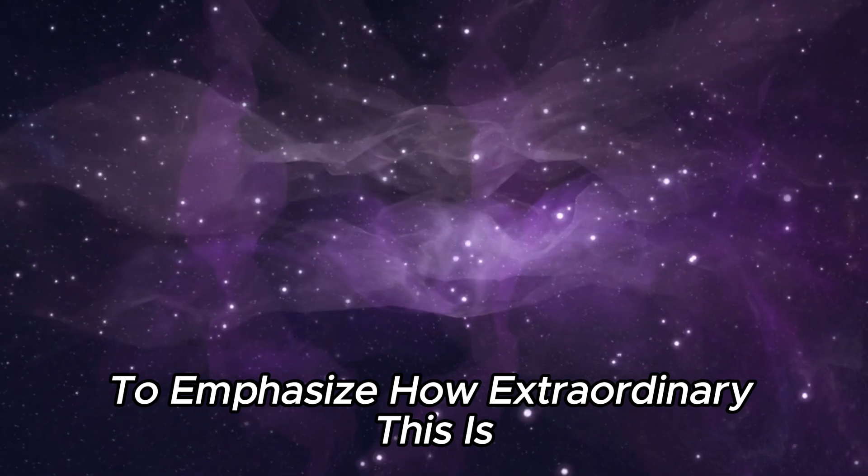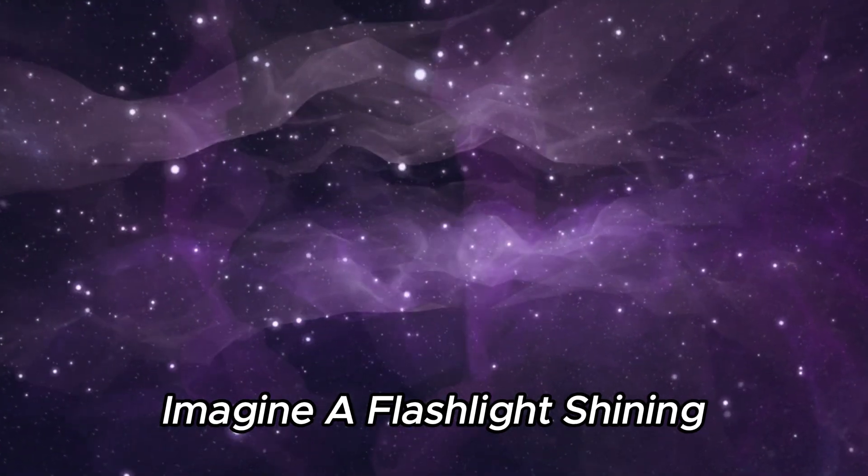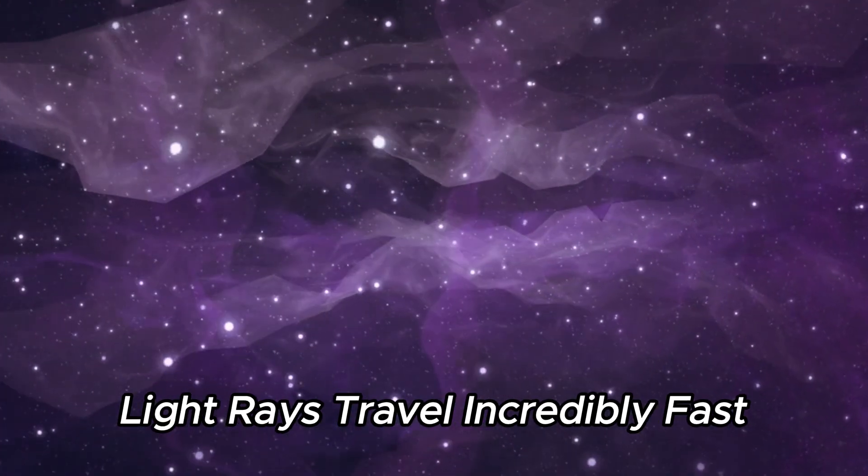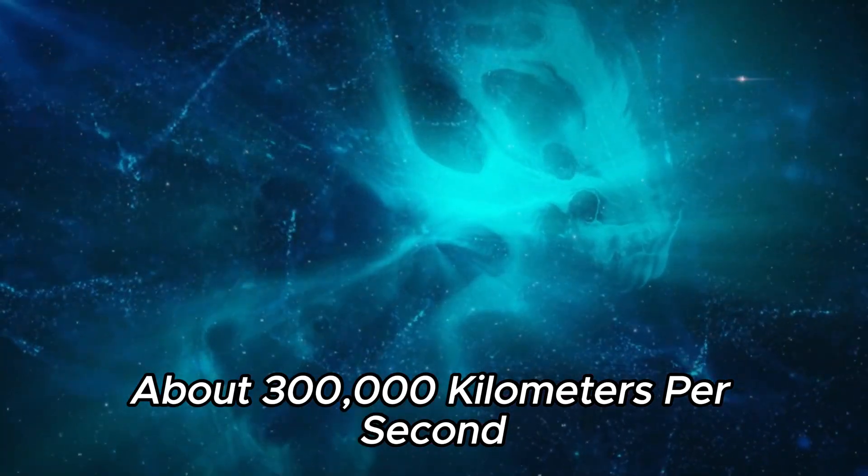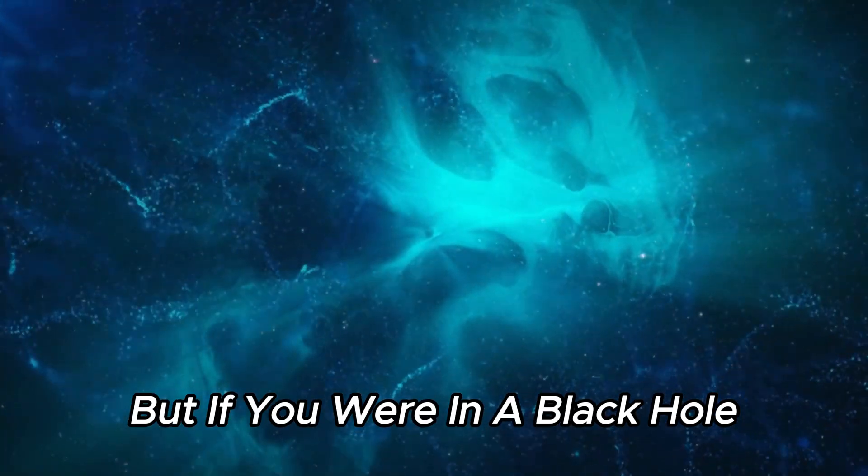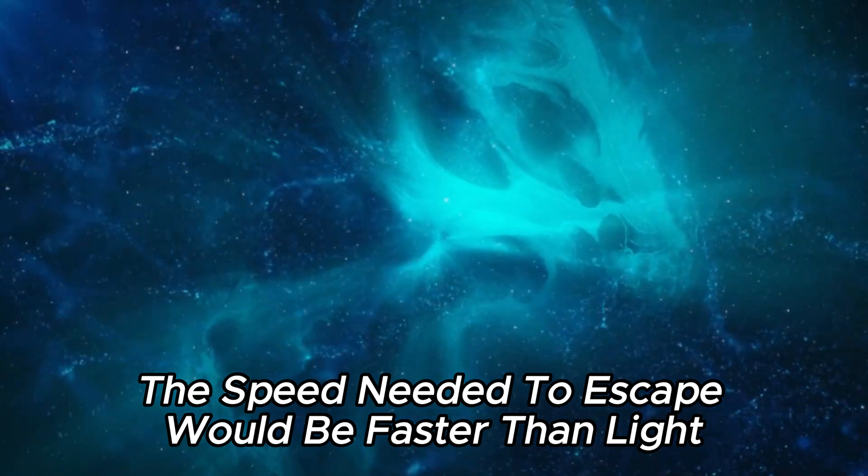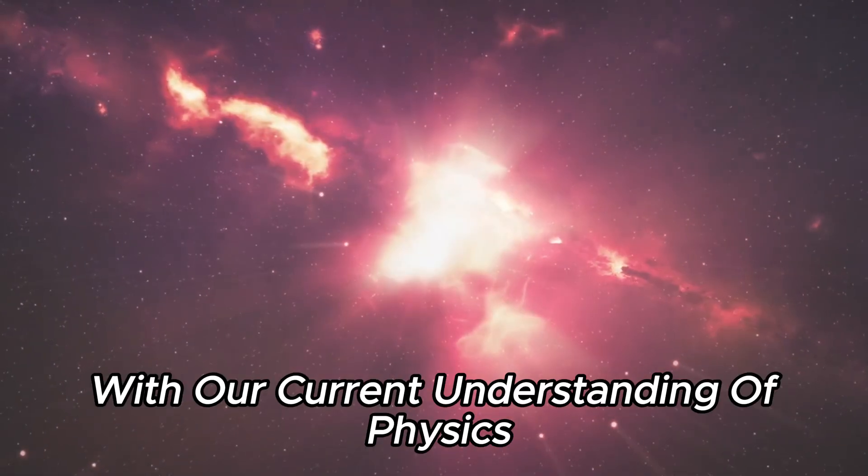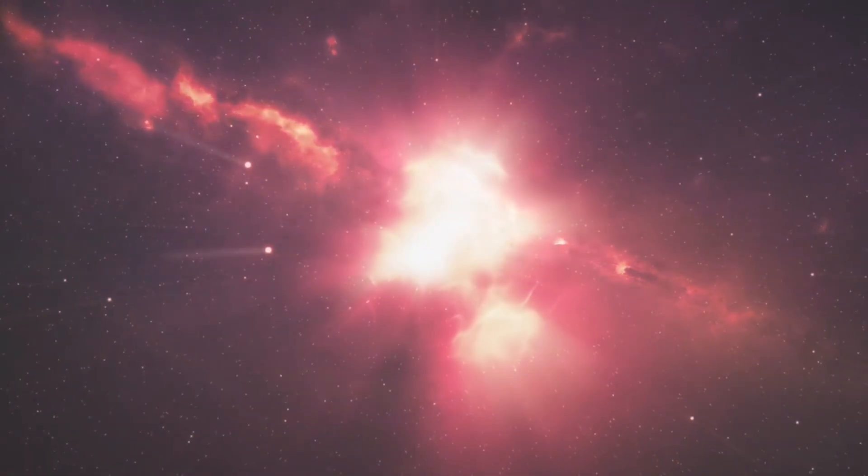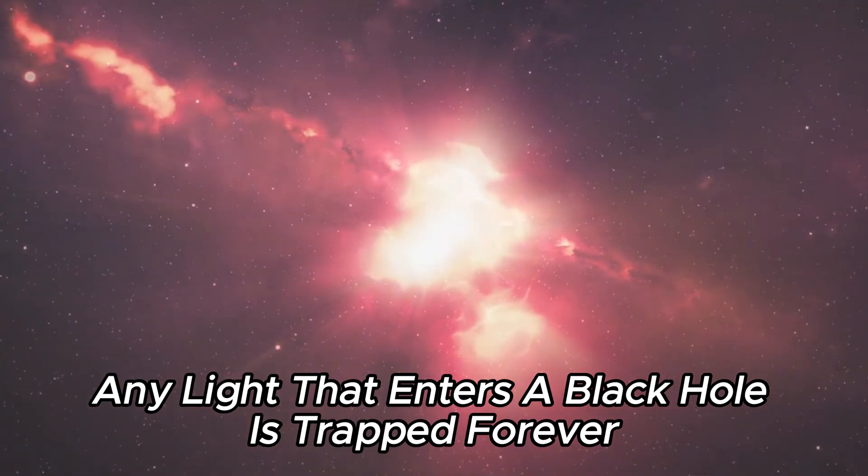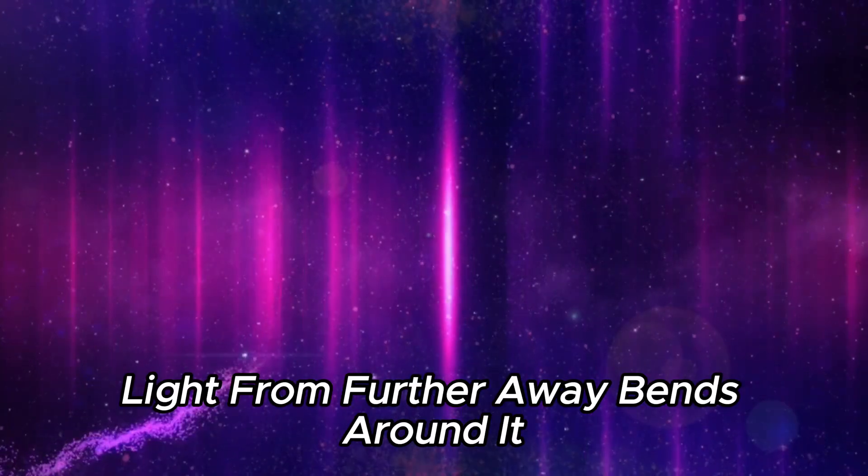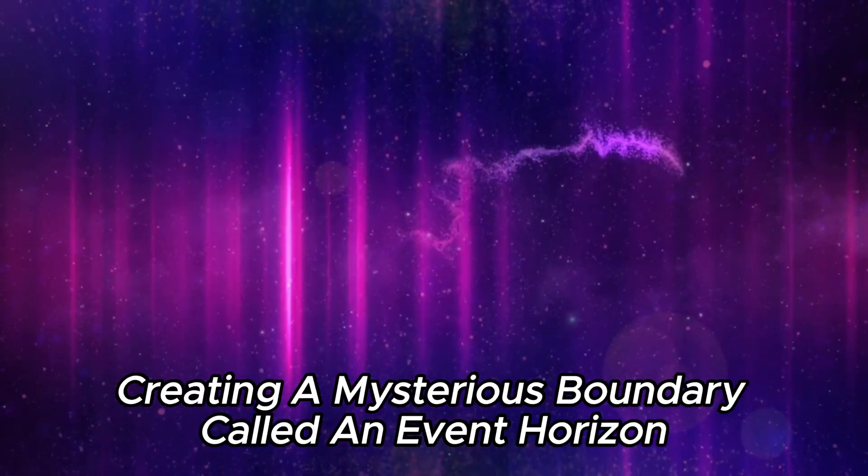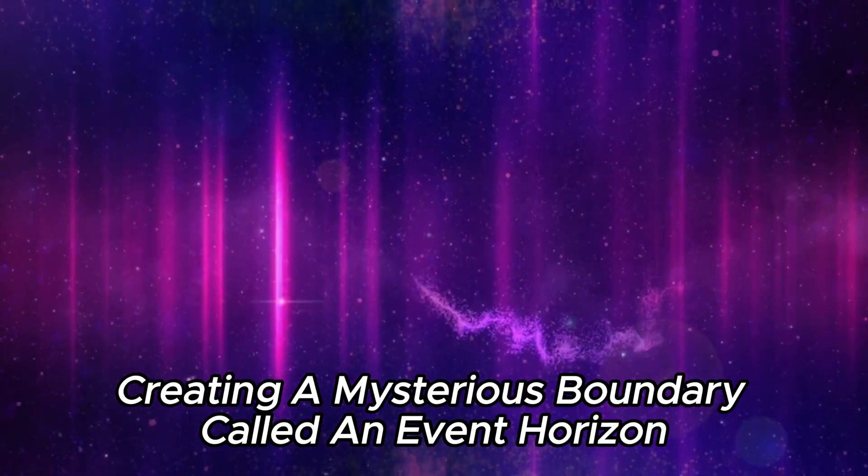This emphasized how extraordinary this is. Imagine a flashlight shining. Light rays travel incredibly fast, about 300,000 kilometers per second. But if you were in a black hole, the speed needed to escape would be faster than light, which is impossible with our current understanding of physics. Any light that enters a black hole is trapped forever and cannot be released. Light from further away bends around it, creating a mysterious boundary called an event horizon.